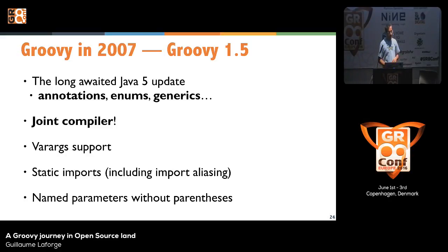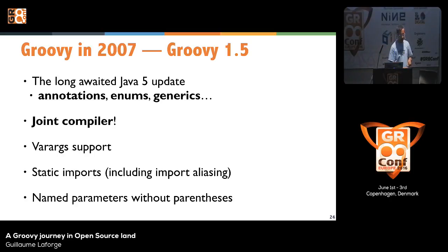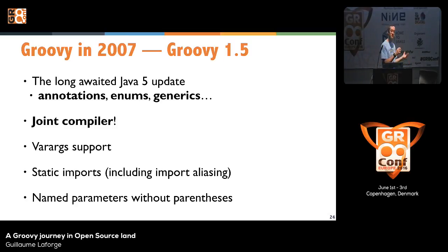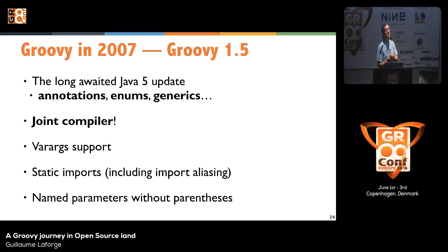Groovy 1.5 is where we added full Java 5 support. Another big feature was the joint compiler — before, it was painful to mix Java and Groovy together. But with the joint compiler, you could now easily have, say, a Java interface implemented in Groovy, or a Java class extending a Groovy class, with a sort of dependency between the languages.